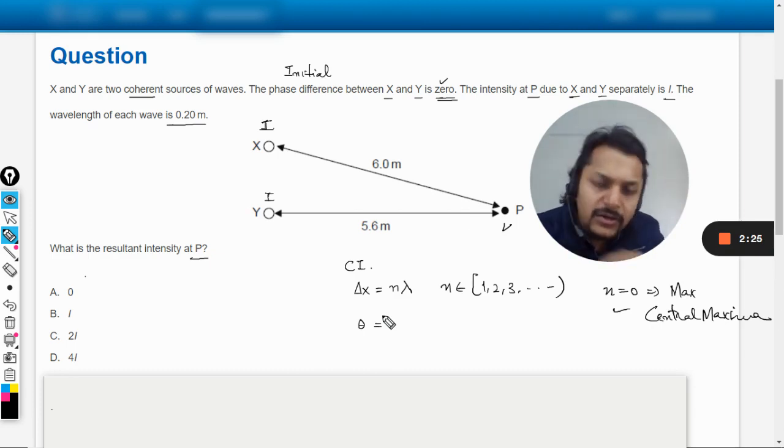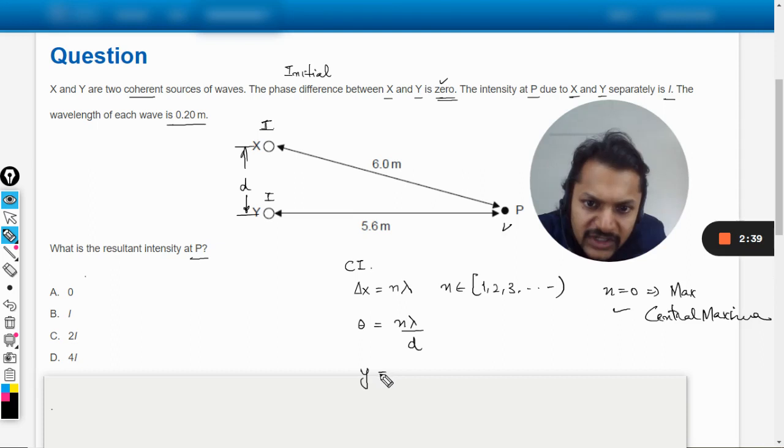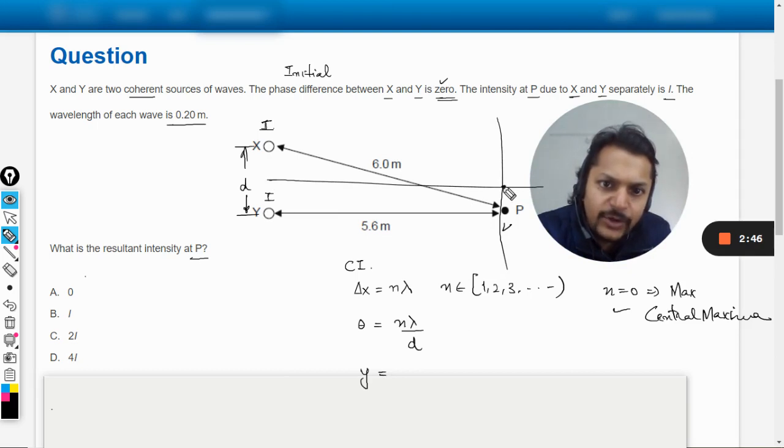Now what else we can find? Theta, the angle with the center of these two slits and the middle line. This theta is given by nλ divided by small d, where small d is the distance between the two slits.